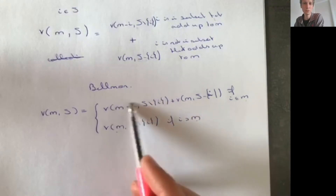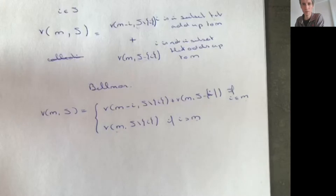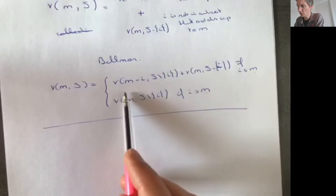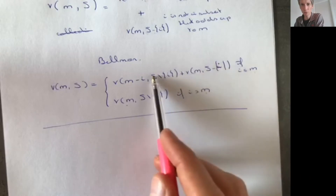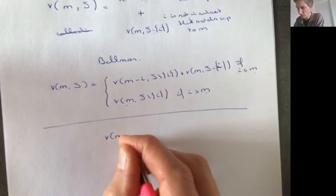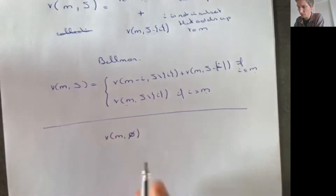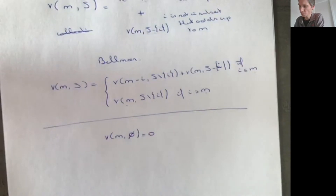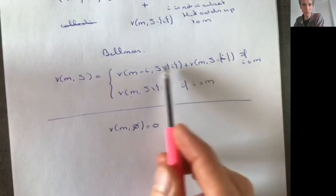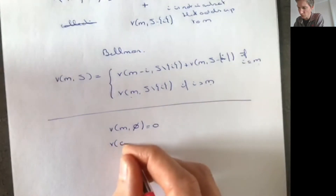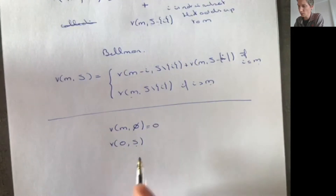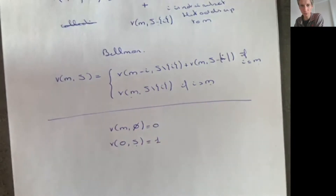How many combinations of numbers in S add up to m? For example, 10 plus 6 is 16, so that's one. Also, 8 plus 6 plus 2 is 16, so that's another one. So maybe there are 3, 4, 5 — we don't know. The question is how many are there. So we try to get this into a recursive structure.